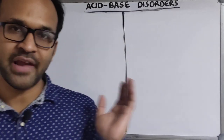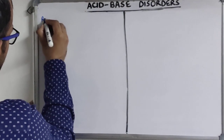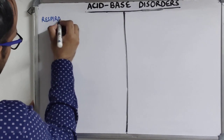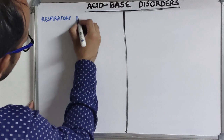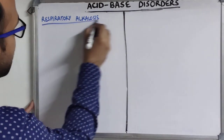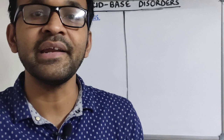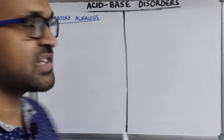We'll continue our discussion on acid-base disorders. So far we have discussed respiratory acidosis. Today we'll talk about respiratory alkalosis. The primary cause of respiratory alkalosis is alveolar hyperventilation, just as alveolar hypoventilation results in respiratory acidosis.